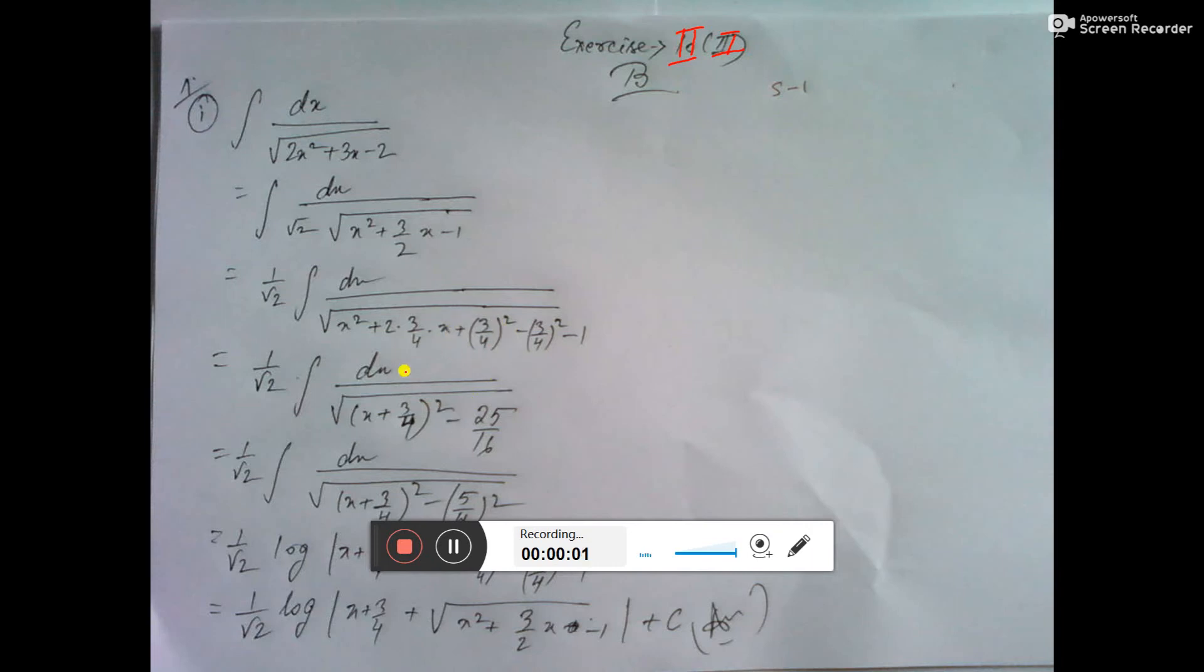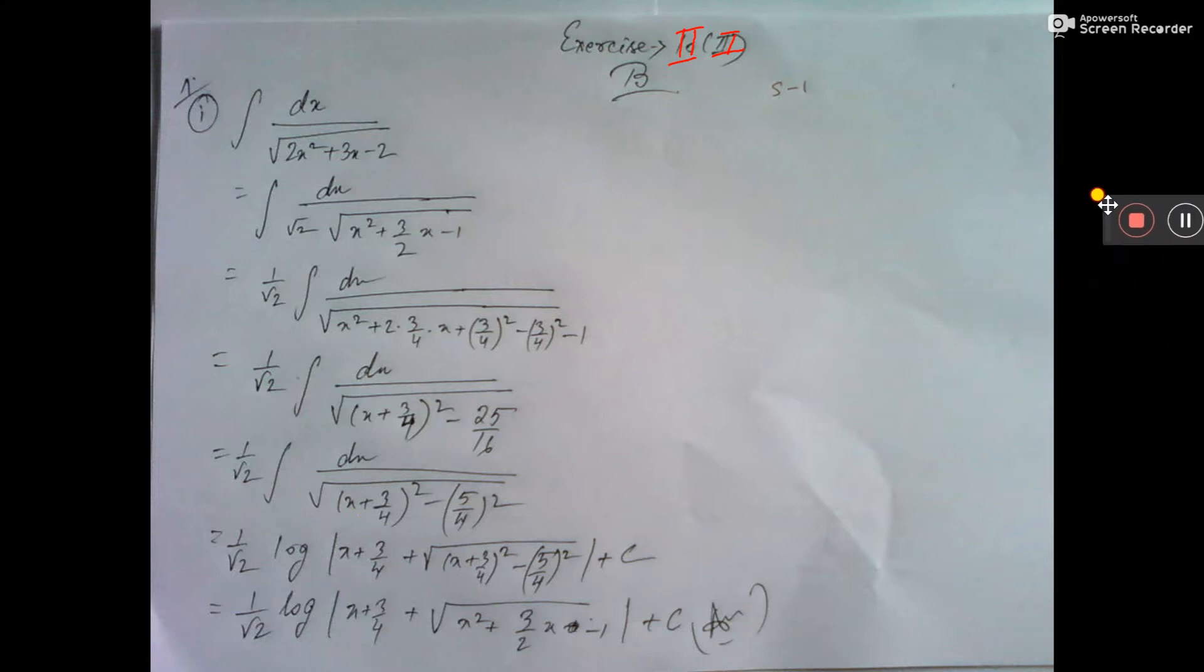We have the integral dx over root of 2x squared plus 3x minus 2. So here if we take dx by this one, if you take root 2 common